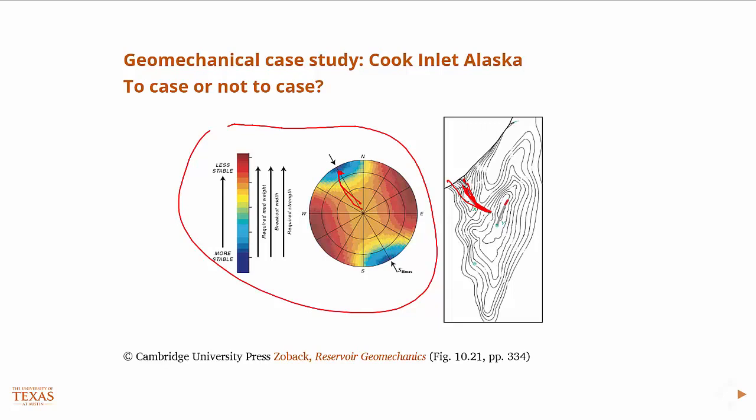However, in the other well, it was just the opposite. So in this well, which would be out here somewhere, I think these are horizontal wells ultimately, so they'd really be at the end. But in this case, they did in fact encounter all sorts of wellbore stability problems, just like the model predicted.